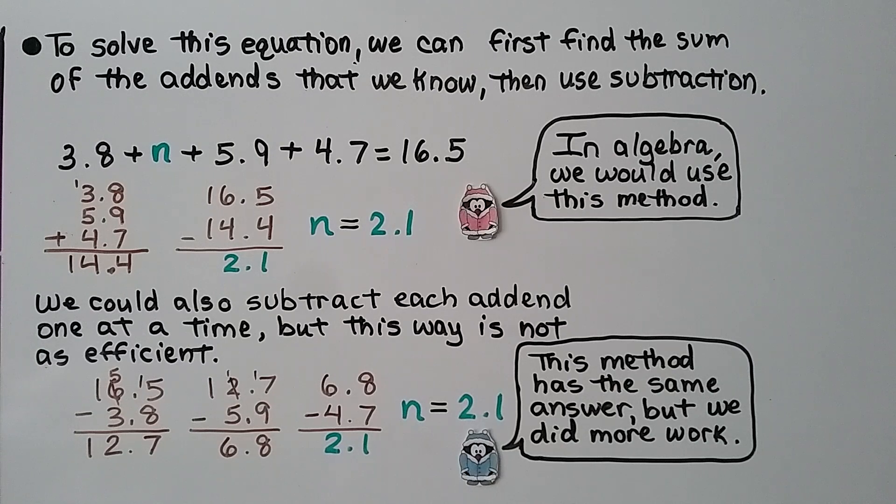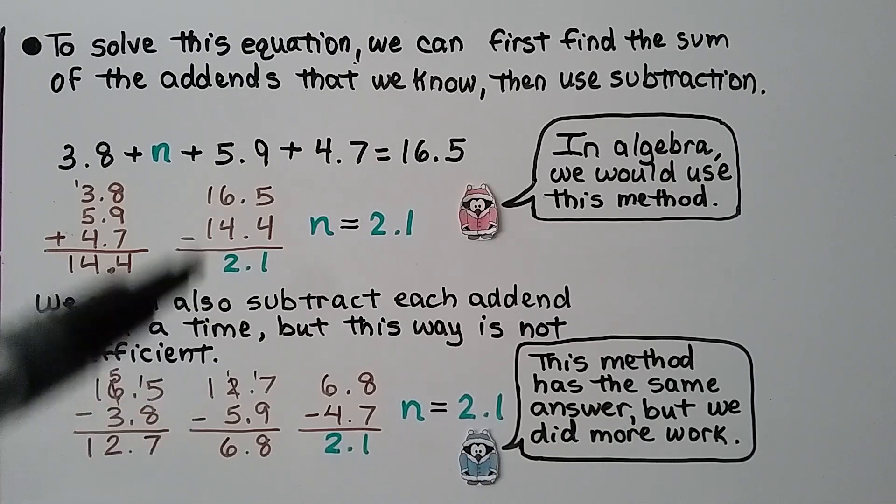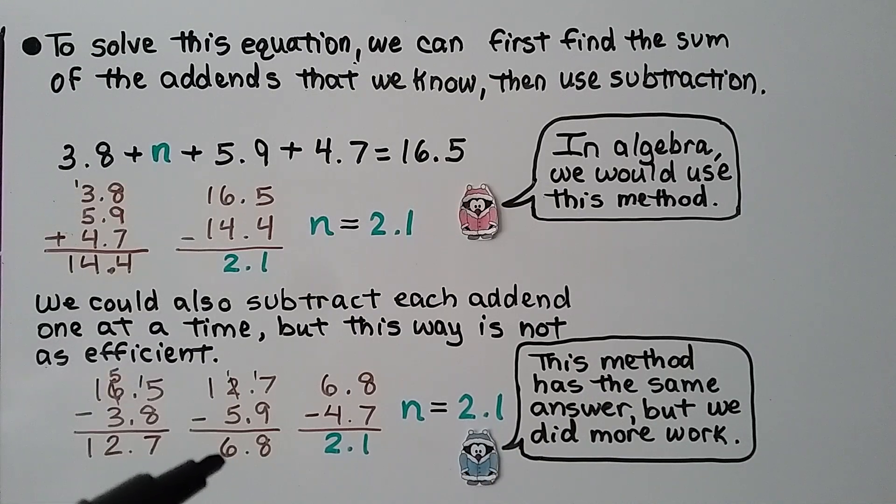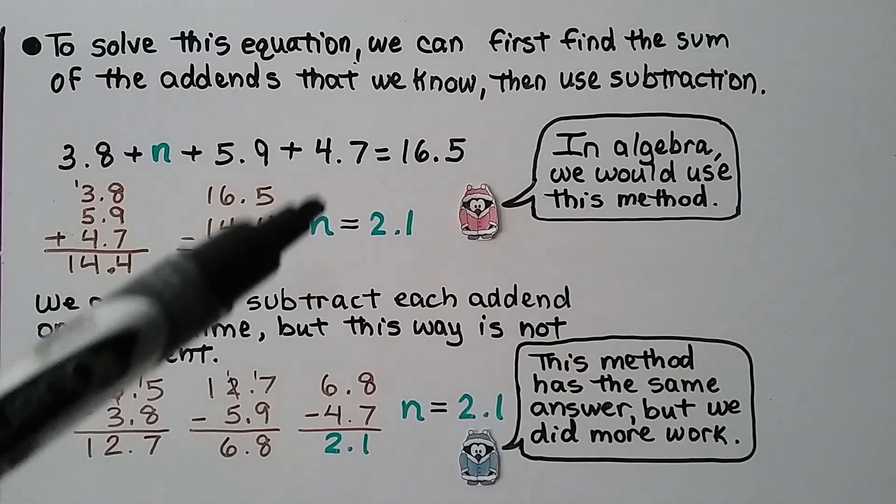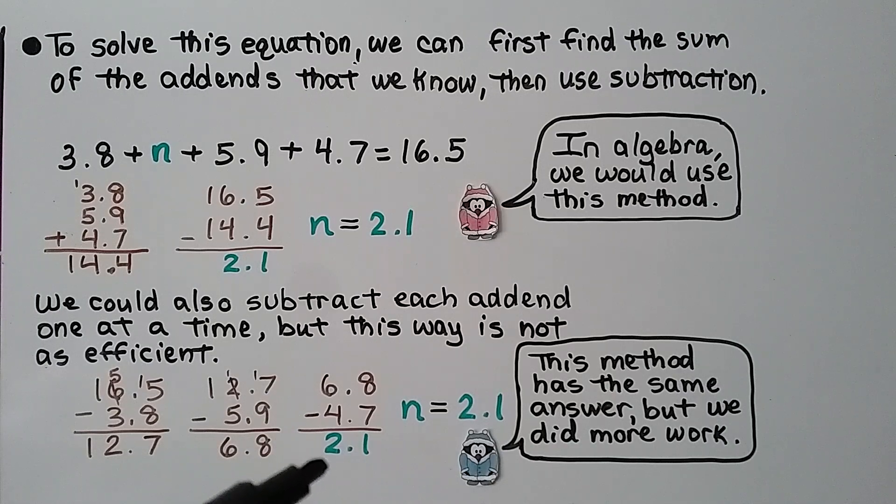Now, we can also subtract each addend one at a time, but this way is not as efficient. We would start with the sum, 16.5. We take away the first addend, 3.8. We get 12.7. Then we take away the next addend, and we get 6.8. Then we take the next addend away, and we get 2.1.